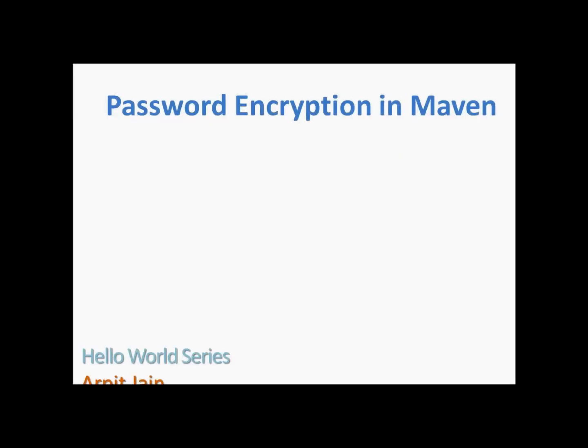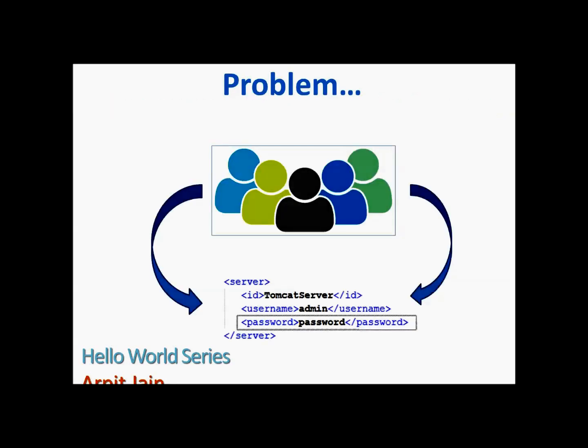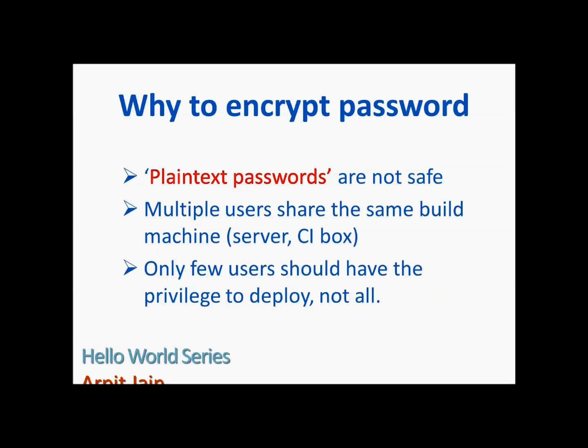Welcome to the Hello World series. Today we will see how to encrypt passwords when using Maven to deploy a web application into Tomcat. The problem is that in previous tutorials, we used the Apache Maven Tomcat plugin to deploy our application, and in settings.xml we configured the server with an ID, username, and password — but that password is stored as plain text.